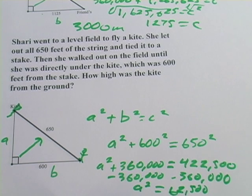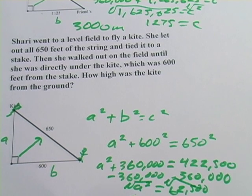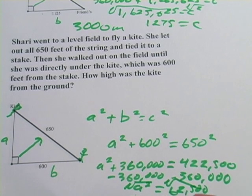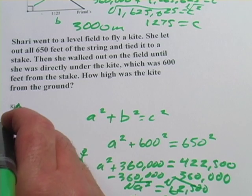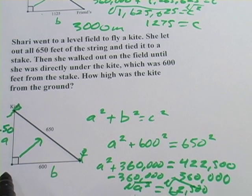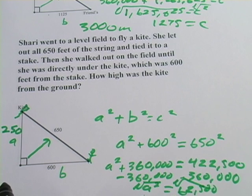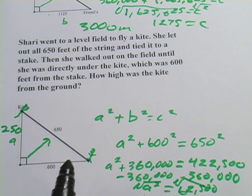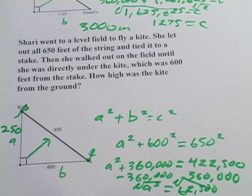Sometimes people stop here and think they've found the answer, but they haven't. We've found what a squared is, but what we're really looking for is a. So we have to take the square root of both sides. The square root of something squared is just itself, so that's just a, that's what we want. And then the square root of 62,500, I'll use my calculator, and it says it's 250. So a is 250, and that means this kite is 250 feet off the ground, which Sherry was able to figure out with the Pythagorean theorem. Pretty cool.